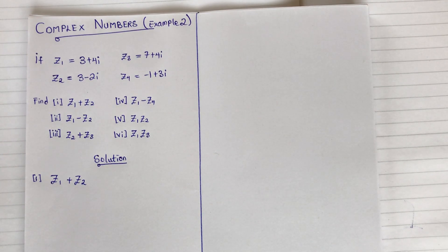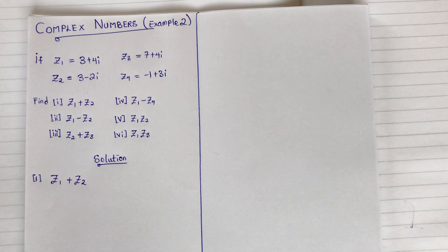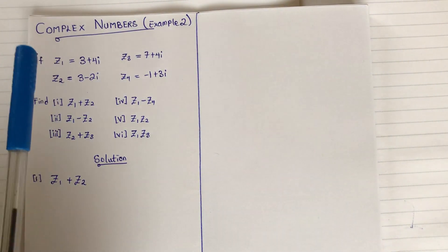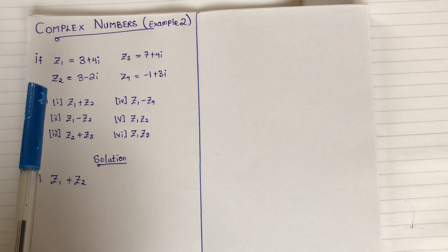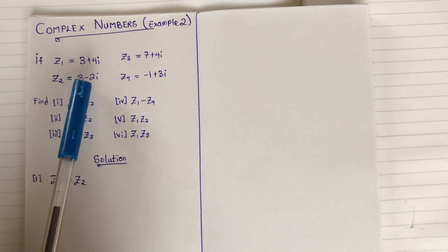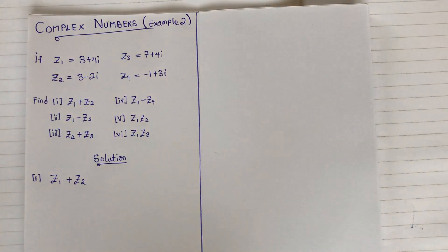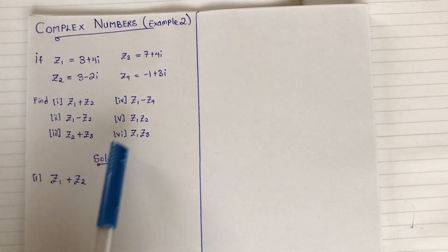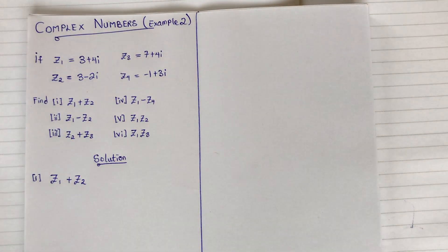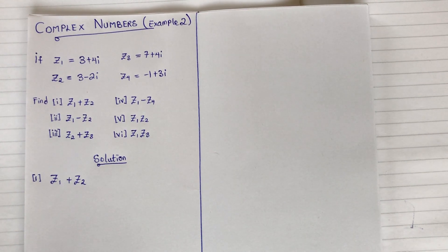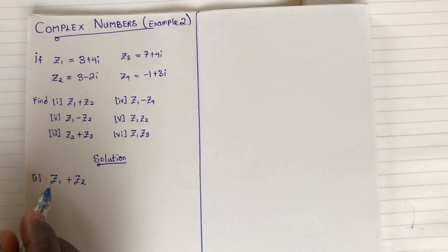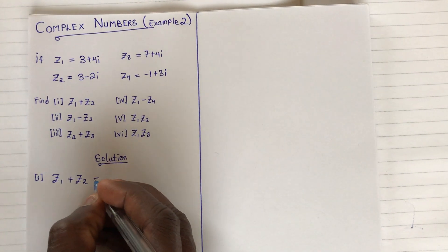I will be taking these examples here. I have z1 to be 3 plus 4i, z2 to be 3 minus 2i, and z3 and z4 are also given. We are told to find all the expressions listed here. I'll be brief — let's box on.